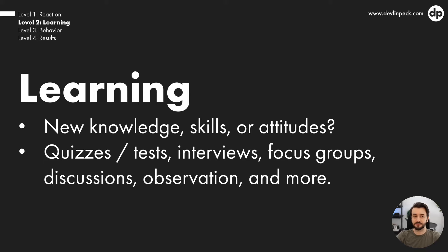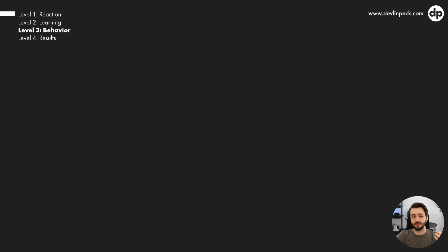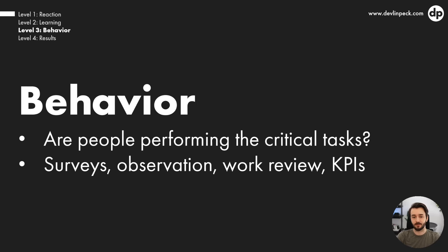Where things start getting really valuable and interesting is at level three: behavior. We want to know — are people performing the critical tasks we identified? Are they actually behaving differently on the job now that we taught them these new knowledge, skills, or attitudes? Are they using what they learned on the job? That's the big question for level three.